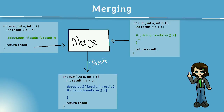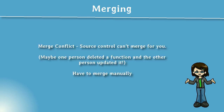One feature of source control is that when multiple people are working on the same file, your source control solution will help you automatically merge those two files together. Sometimes the changes are unclear to the computer, so you have to merge the code on your own. This usually happens if you're merging two source files that changed in the same section of code. But for the most part, merging happens automatically and you don't have to worry about it.